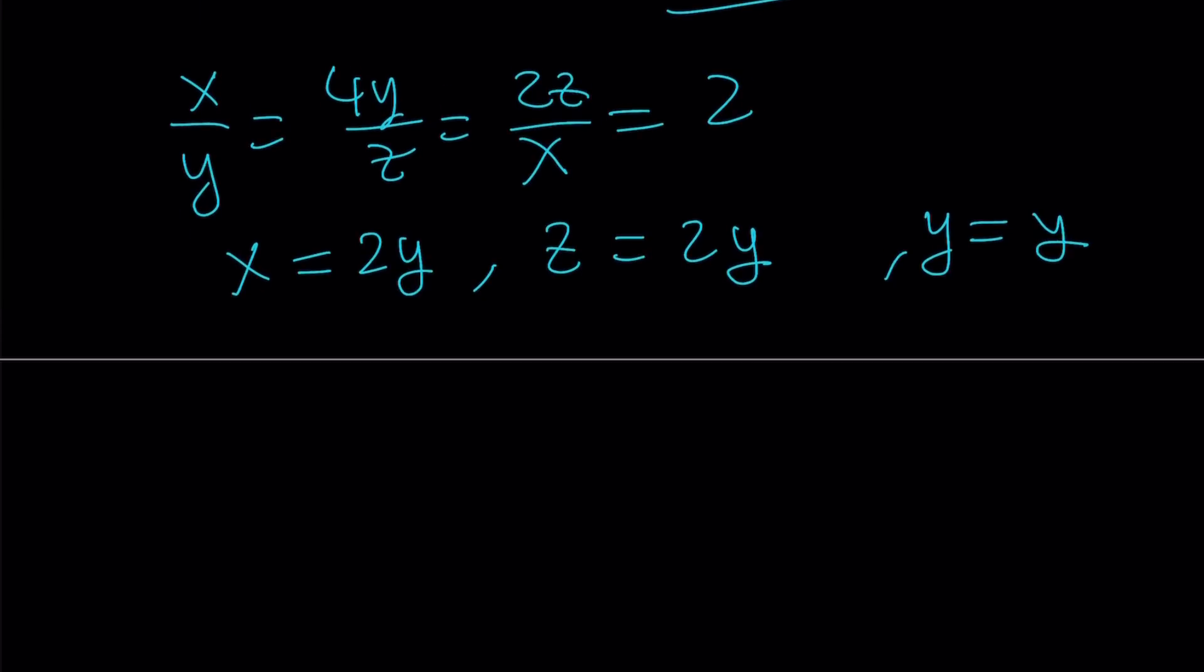Therefore, we can write the solution as an ordered triple. x, y, z can be written as 2y, comma y, comma 2y. Which means if x and z satisfy, that should be a 2y. So, in this case, if we have this type of ordered triple, then definitely our sum is going to take the minimum value.